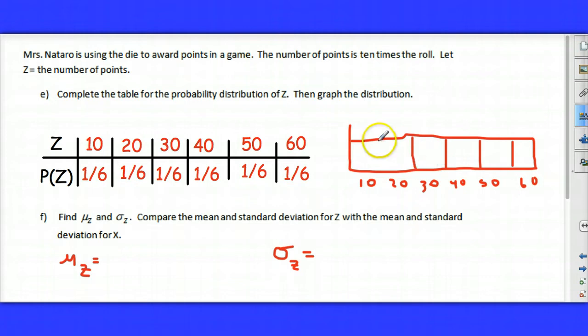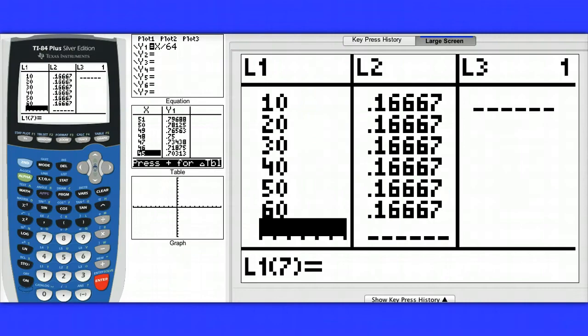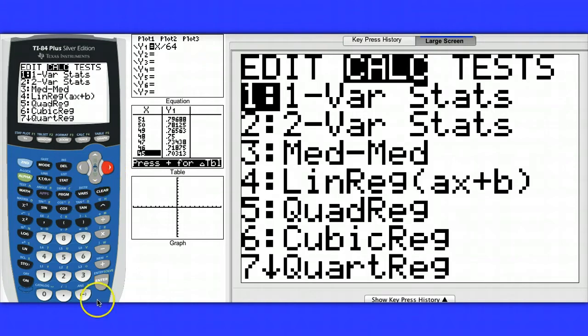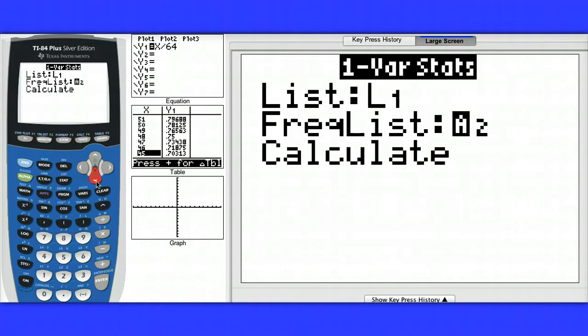Now how is the mean and standard deviation for this one going to be impacted? Well, once again, let's go to our graphing calculator to find out. Here you can see I've entered the values for the random variable z. And now I'm going to do stat, calc. Now I'm guessing the mean is going to be multiplied by 10 since I multiplied each value of the random variable by 10.